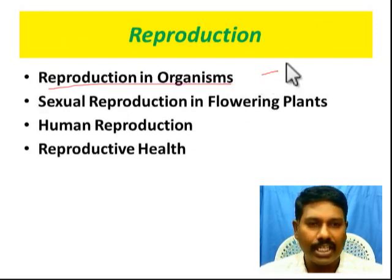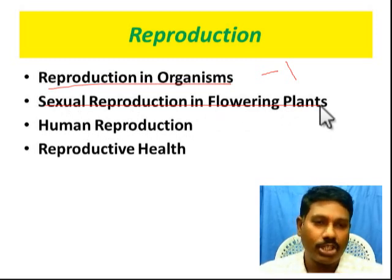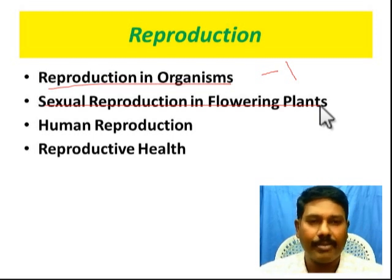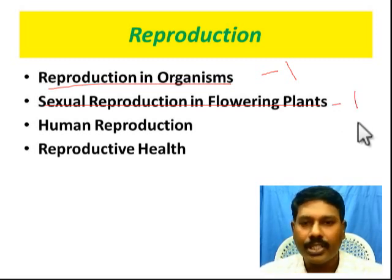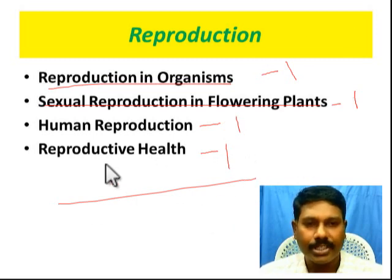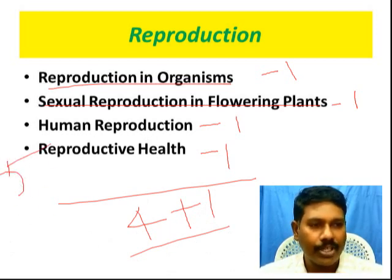Reproduction in organisms takes one day. In sexual reproduction in flowering plants, there is a lot on pollination, pollinating agents, and the double fertilization concept. You must know about microsporangium, macrosporangium, and male and female gametes. That is how fertilization works - it is an easy concept, you can remember it easily. Fertilization is a common part. Human reproduction and reproductive health each get 4 hours per chapter. That gives you 5 days for the reproduction unit.